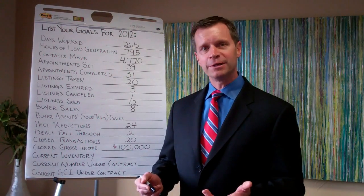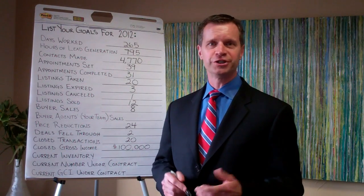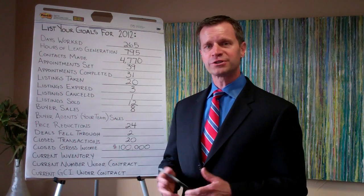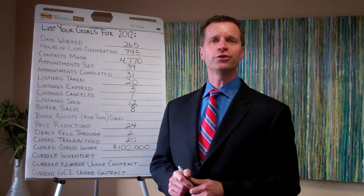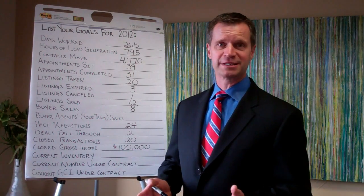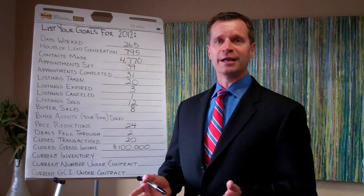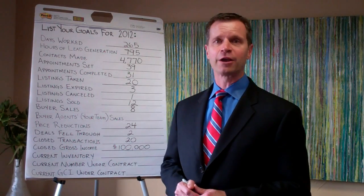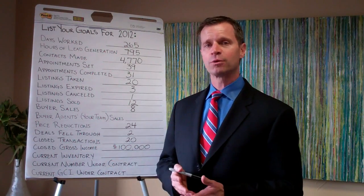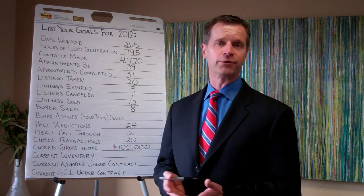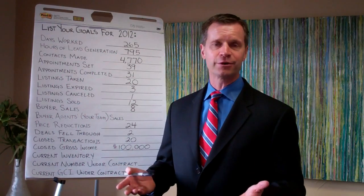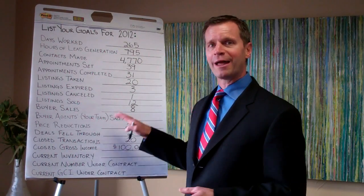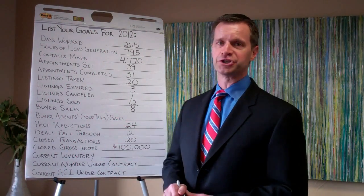What I'm going to be doing is reverse engineering the numbers with you today. So the first thing is, let's say your 2012 business plan goal is to earn $100,000 in income. This number can work with any number — if you want to earn $500,000 or $1 million, you can apply this the same way off the sheet.